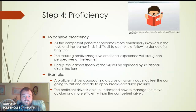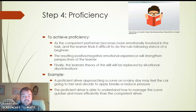Stage four is proficiency. As the competent performer becomes more emotionally involved in the task, the learner finds it difficult to maintain the rule-following stance of a beginner. The resulting positive or negative emotional experiences strengthen the learner's perspective, and eventually the learner's theoretical understanding of the skill is replaced by situational discrimination. For example, a proficient driver approaching a curve on a rainy day may feel the car is going too fast and decide to apply the brakes, managing the curve more quickly and efficiently than a competent driver.